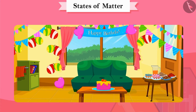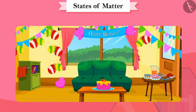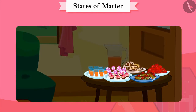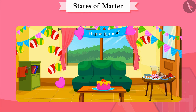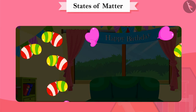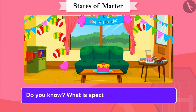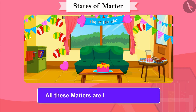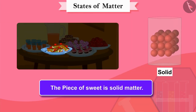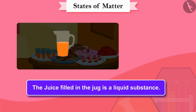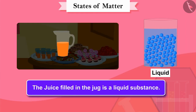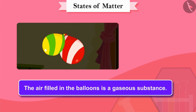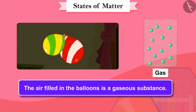Preparations for someone's birthday are going on here. Let's see what items are kept here. Some sweets and juice are kept for the guests, and the room is decorated with balloons. All these matters are in different states — the piece of sweet is solid matter, the juice filled in the jug is a liquid substance, and the air filled in the balloons is a gaseous substance.